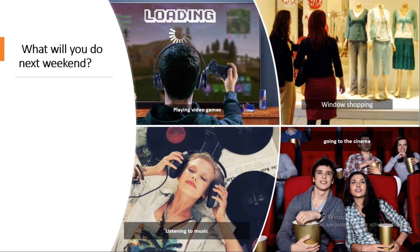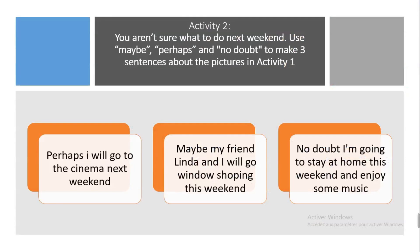Use 'maybe' or 'perhaps' for uncertainty, and 'no doubt' for certainty. Here are three example sentences. Starting with 'perhaps': 'Perhaps I will go to the cinema next weekend.' Sentence two: 'My friend Linda and I will go window shopping this weekend.' Sentence three: 'No doubt I'm going to stay at home this weekend and enjoy some music.' So we use 'perhaps' and 'maybe' for uncertainty, and 'no doubt' for certainty.